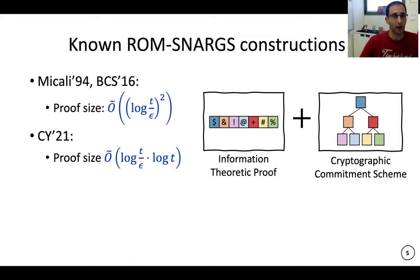So what constructions do we have? We have the Micali and BCS construction. Micali is based on PCPs and BCS is based on IOPs. Both of them take this information theoretic proof and compile them to a SNARG. But the proof size in both of them is the same. So the proof size, the size of the SNARG that you need to send to the verifier, is log(t/ε)², okay? And here I'm hiding some low order terms in this Õ tilde. So t is the running time of the cheating prover and ε is its success probability.